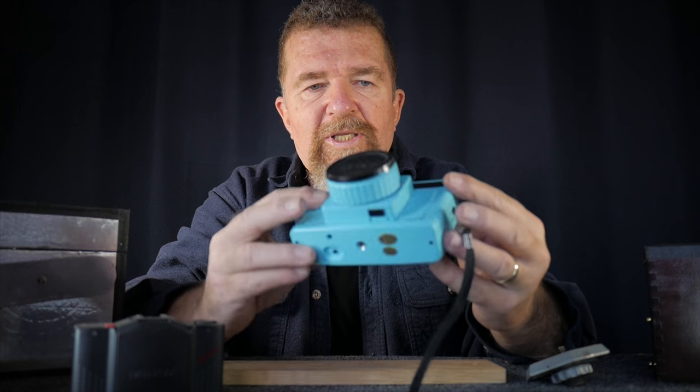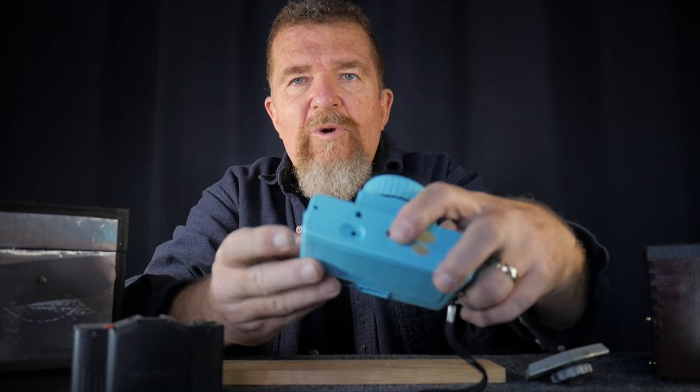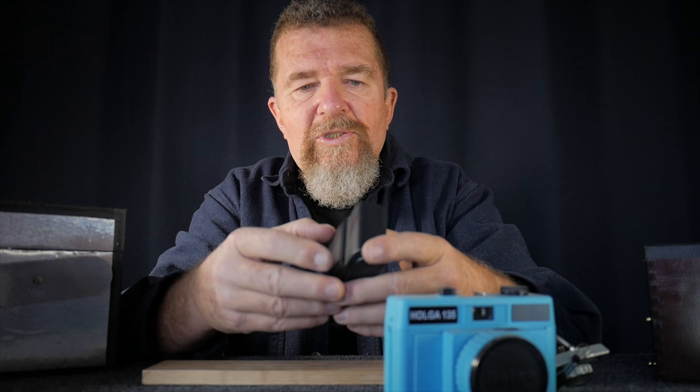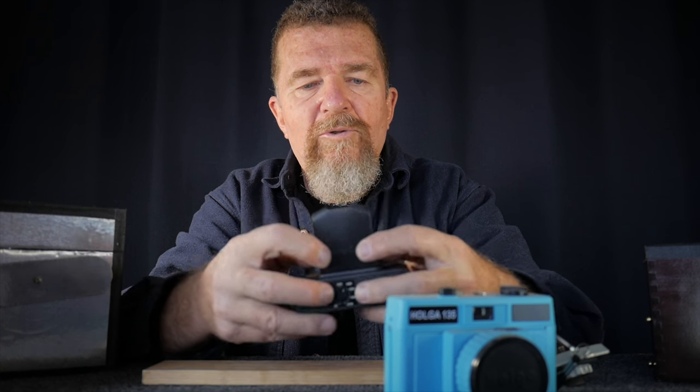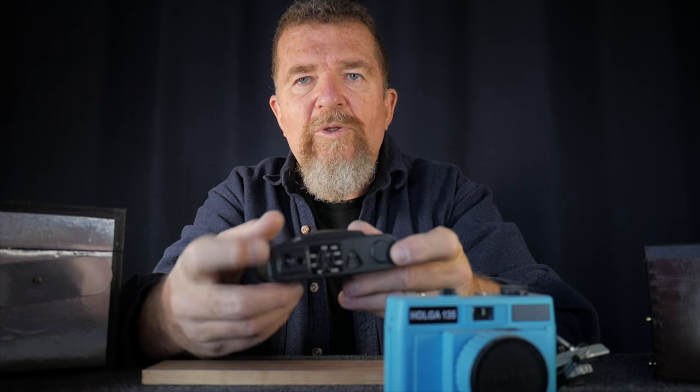When you buy a commercially manufactured camera, you're going to get a tripod bushing almost always. Even something as inexpensive as this little Holga 135 plastic camera has a tripod bushing right there on the bottom. And this nice little Minox GTE, a little folding micro-size 35 millimeter camera, has a tripod bushing built into the base of it.